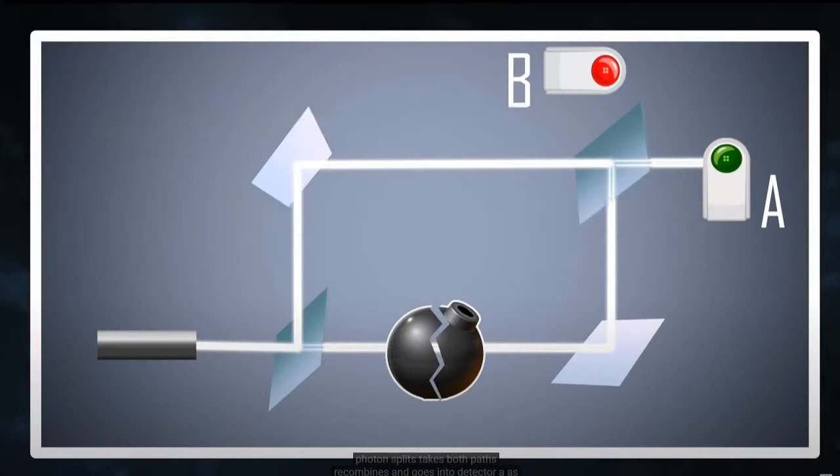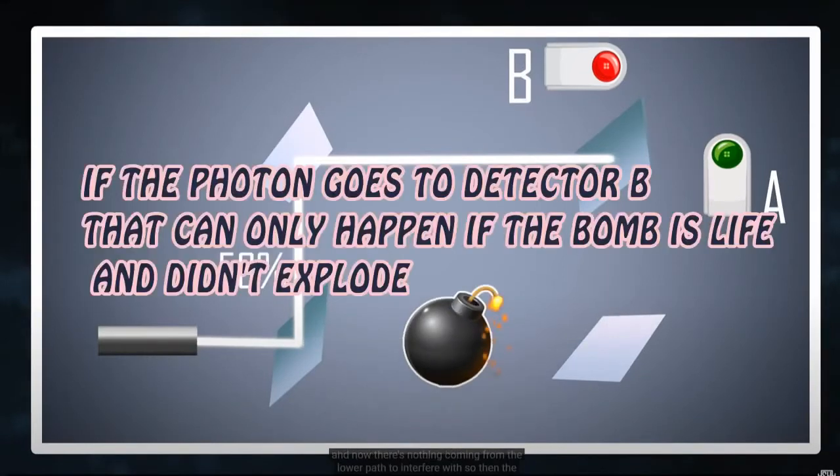To understand the experiment, please watch the video. I put the link below. In the video at 8:50 it said, if the photon goes to detector B that can only happen if the bomb is live and didn't explode.